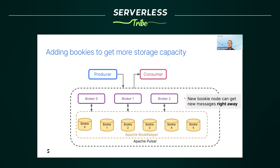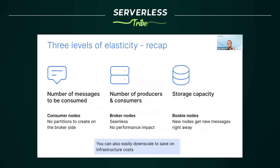When you need to store more data, you just add more bookies. As soon as a new bookie is added, it's immediately eligible for new messages — no data rebalance required. Here's a recap of the three levels of elasticity: scaling consumers doesn't require complex operations like adding partitions; adding broker nodes requires no data movement; and adding bookie nodes immediately makes new storage available. You can also easily downscale to save on future costs.